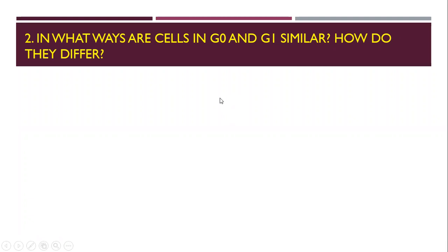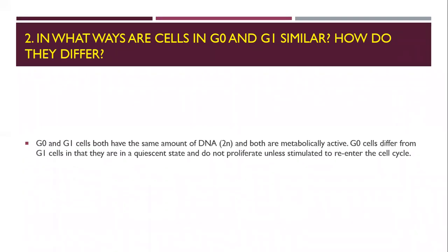In the cell cycle, if cells lack growth factors or nutrient availability, they go into the resting phase, the G0 phase. G0 and G1 are similar in that the amount of DNA is the same and both are metabolically active. The difference is that in G0, the cell is not proliferating — it remains in that phase waiting to be stimulated to re-enter the cell cycle. If you introduce growth factors or nutrients, the cell moves from G0 back into G1.